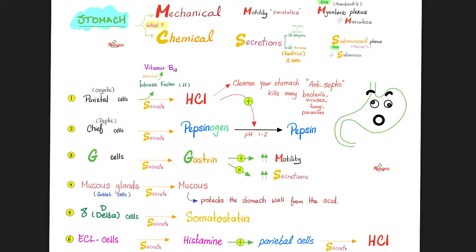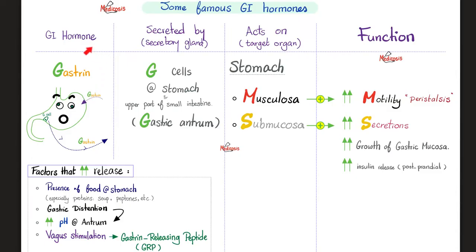The stomach has G cells. G cells in the stomach secrete gastrin, which is pro-gastric — it boosts stomach motility and secretions. Gastrin is released by the G cells of your stomach as well as the upper part of the small intestine. It promotes peristalsis and secretion, including secretion of hydrochloric acid and pepsinogen. When pepsinogen is activated, it becomes pepsin.